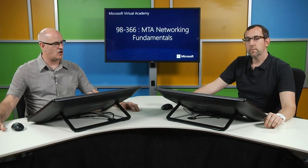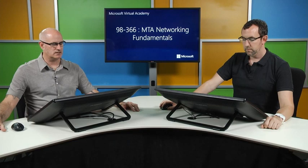Baseband refers to networks using digital signaling over a single frequency. Broadband systems use analog signaling over a range of frequencies, enabling multiple channels over the same physical medium. For digital, the signal is discrete — zeros and ones, it's here or it's here. For analog, it can be anywhere within the range. Think hands of a clock versus a digital clock.